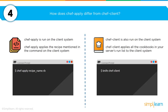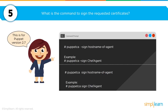A common question about Chef is: how does `chef apply` differ from `chef client`? Fundamentally, `chef apply` validates the recipe you're working on, whereas `chef client` applies and validates the entire cookbook running in your server environment. One is focused on the recipe, and the other is focused on the entire cookbook.